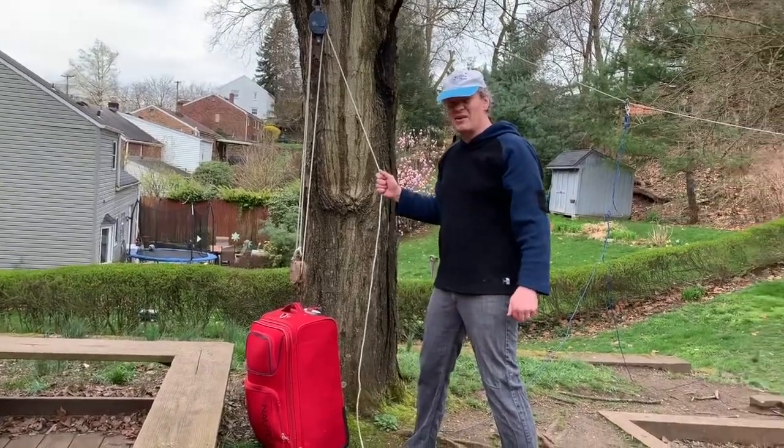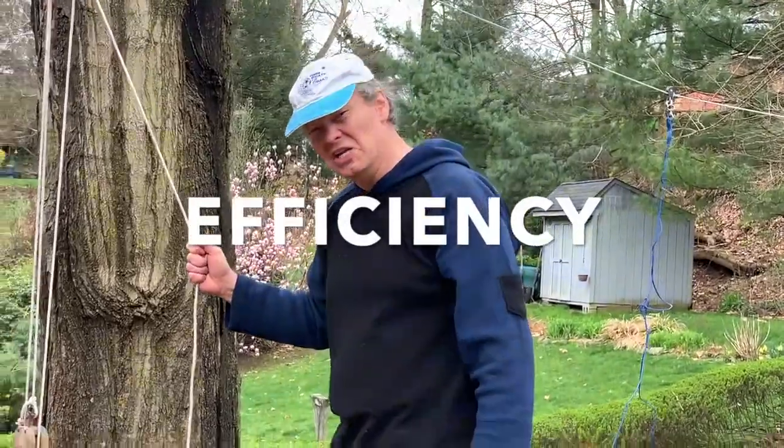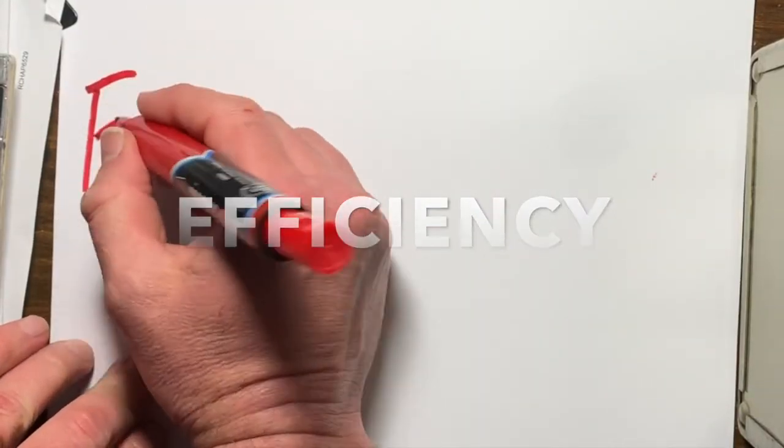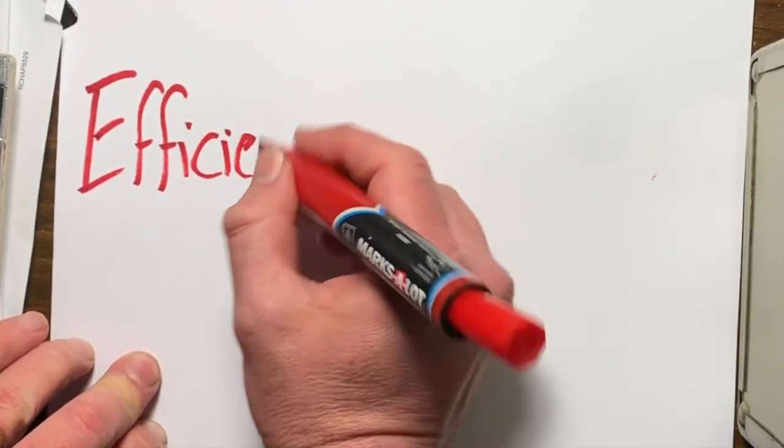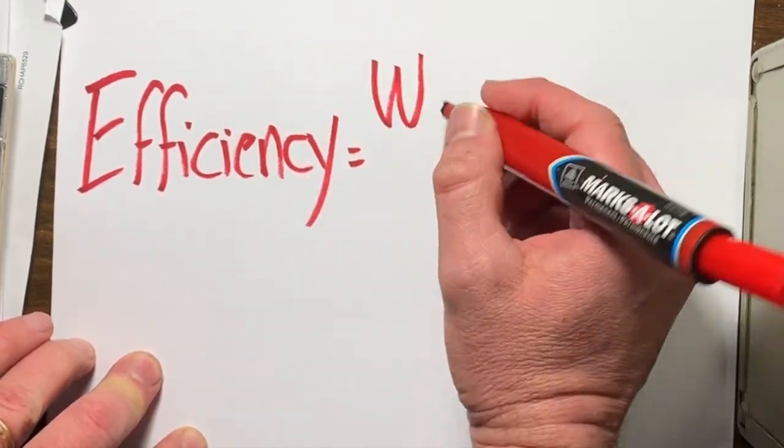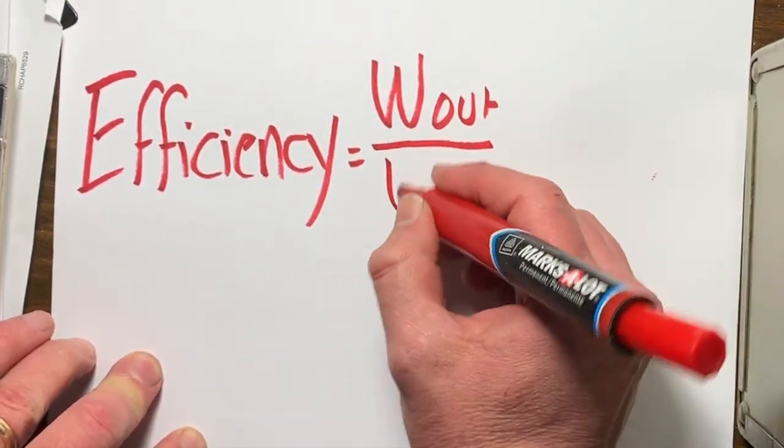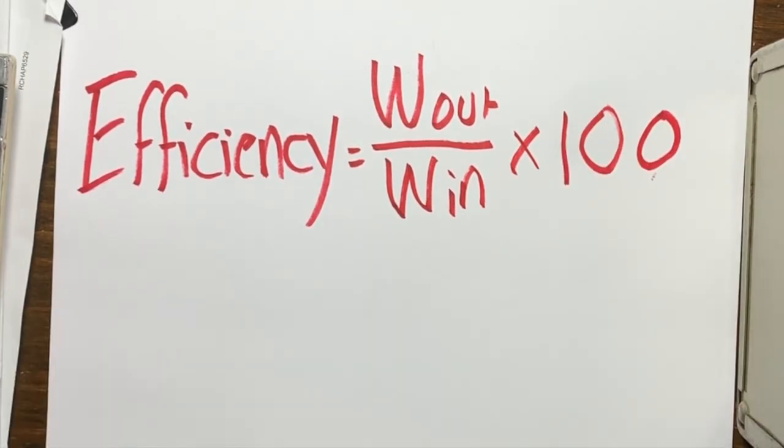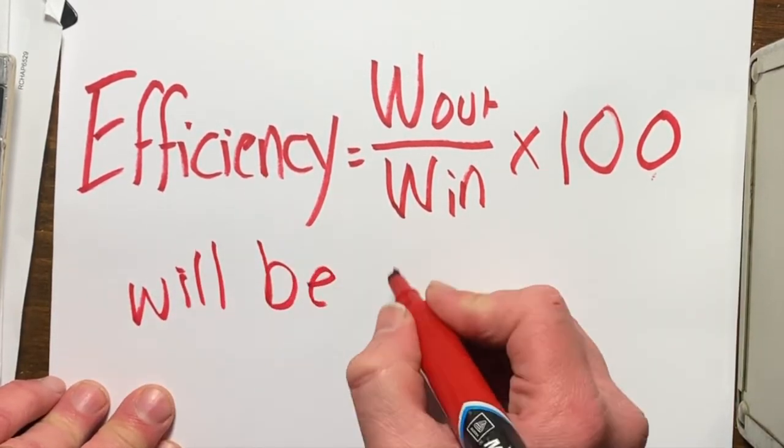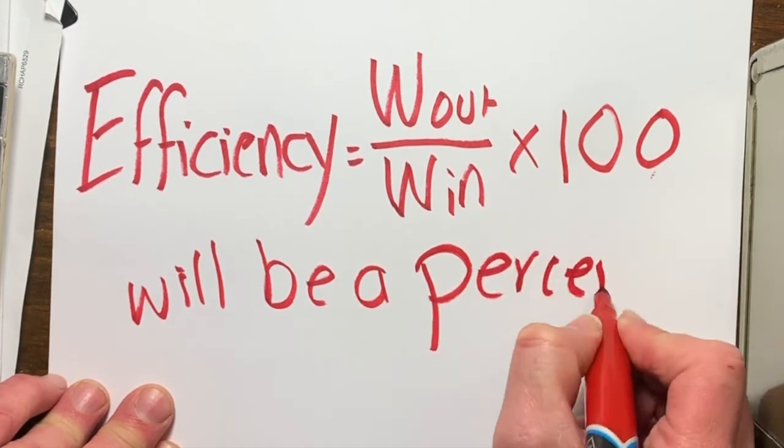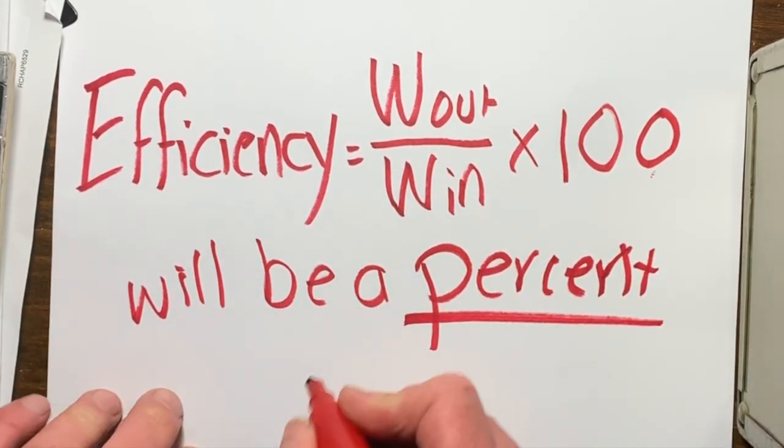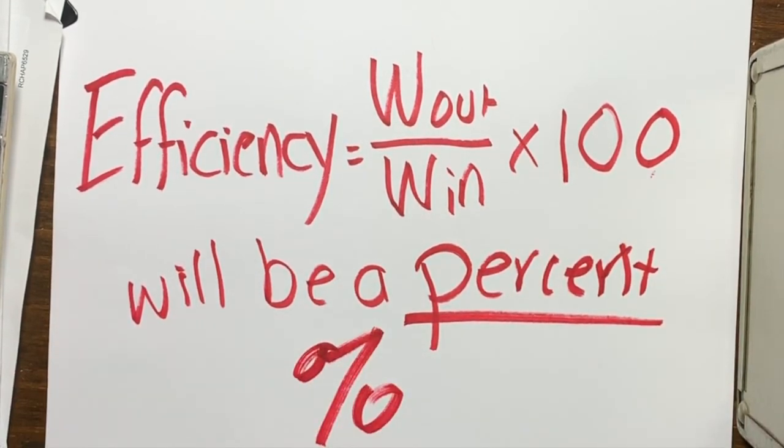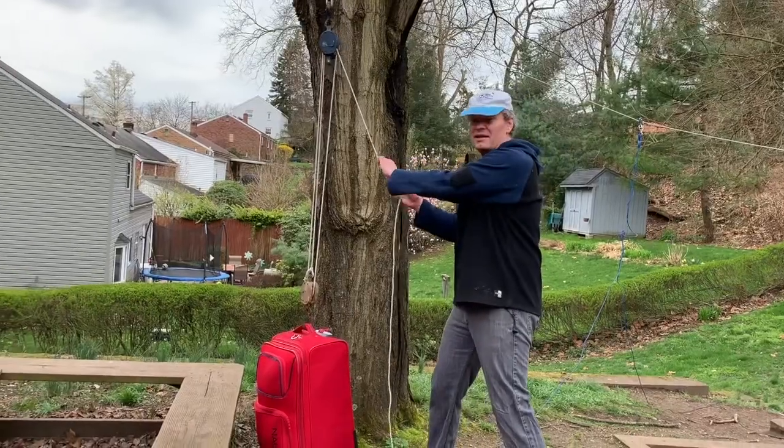So how do I calculate the efficiency of a machine? Efficiency is work out divided by work in times 100, and it will give you a percent. Hey, why do you sound so much like me? Uh, I am you, dumb! All right, let's do this.